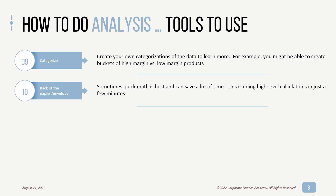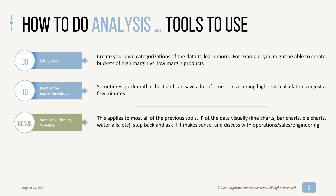Number ten is back of the napkin, or back of the envelope — some quick math is often best. Do a high-level calculation in just a few minutes based on what you know. For example, if sales went down 10%, roughly how much would you need to reduce headcount? You can do that math quickly without making it a science experiment. The bonus tip, which applies to almost all of these tools, is to always step back, discuss what's going on with people who know operations, sales, and engineering, and visualize the data — use a trending chart, line chart, bar chart, or waterfall — to see what's really going on and whether it makes sense.